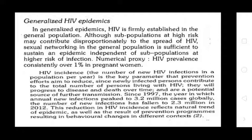3. Generalized HIV Epidemics: In generalized epidemics, HIV is firmly established in the general population, although subpopulations at high risk may contribute disproportionately to the spread. Sexual networking in the general population is sufficient to sustain an epidemic independent of subpopulations at higher risk. Numerical proxy: HIV prevalence consistently over 1% in pregnant women.